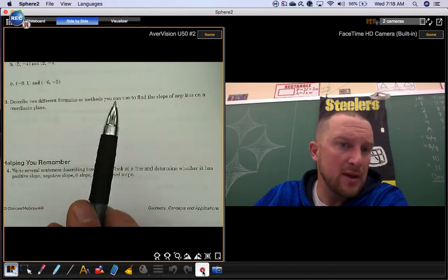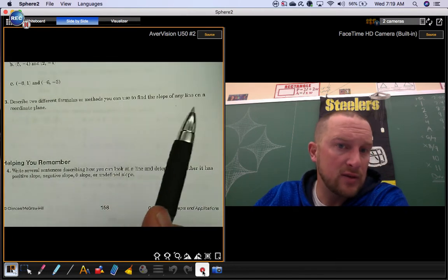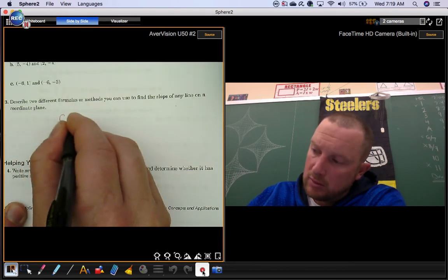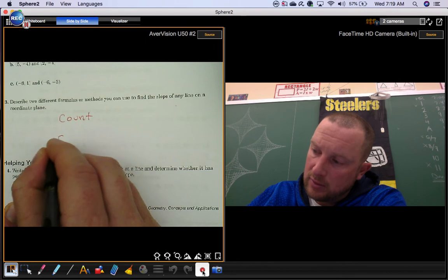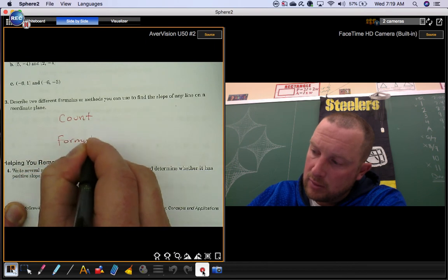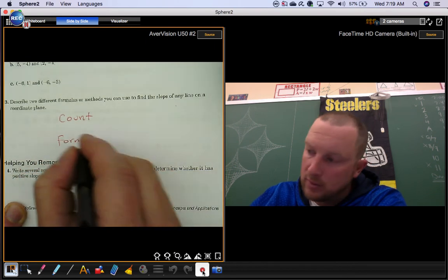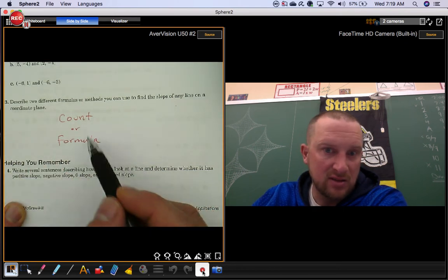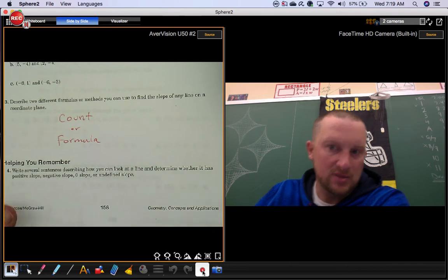Describe two different formulas or methods you could use to find the slope of a line on a coordinate plane. You could count, you could use a formula. I didn't really describe, I just listed the two. You can describe them.